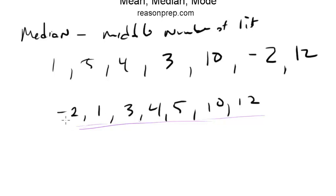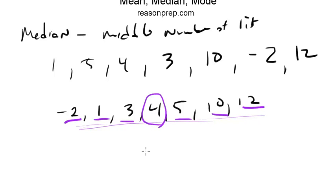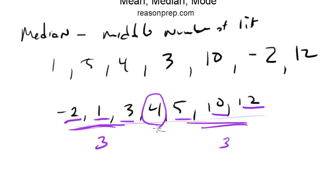The best way to find it is to cross them out as you go — one from each end — until you're left with the middle number that doesn't have a pair. The other way to see it is that there are 3 numbers on each side, so the middle number divides those two groups. The median for this list is 4.